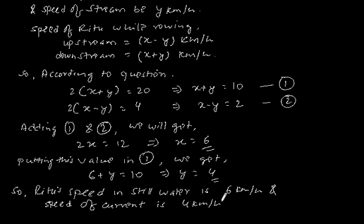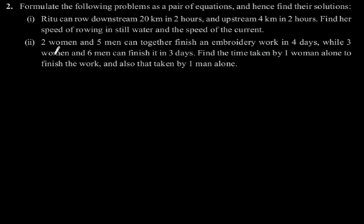The speed of the current is 4 km per hour. Now the second part: 2 women and 5 men can together finish an embroidery work in 4 days, while 3 women and 6 men can finish it in 3 days. Find the time taken by one woman alone to finish the work and also the time taken by one man alone.